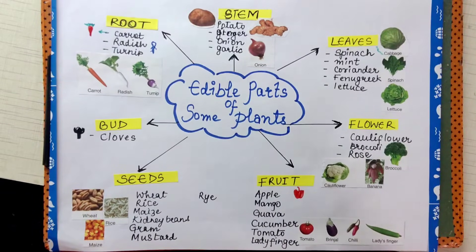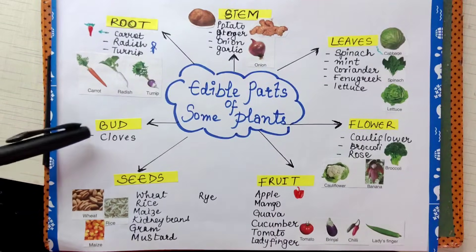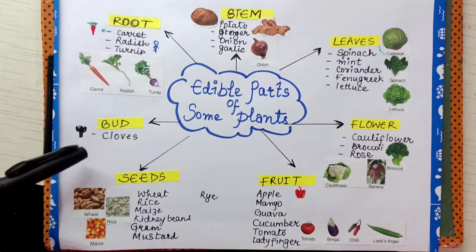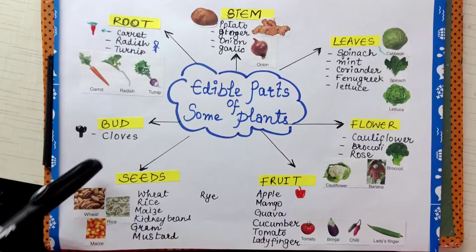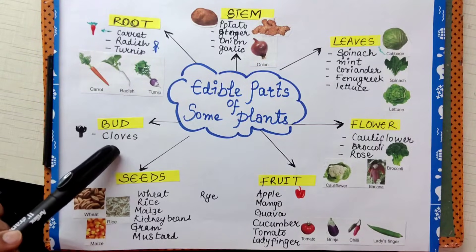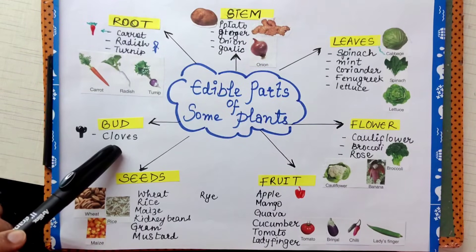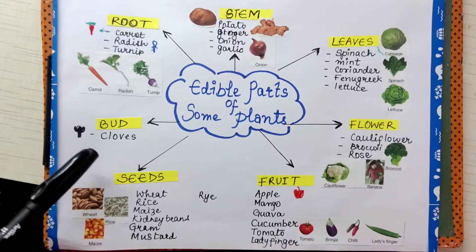Then there is a bud which we eat. That dried bud — the example is cloves, also called long.